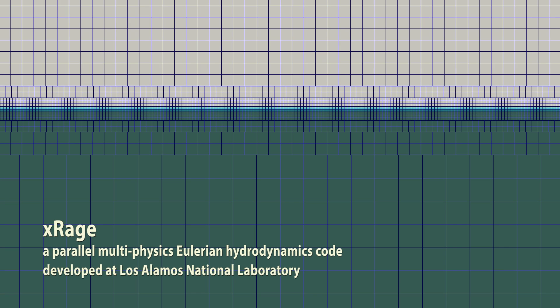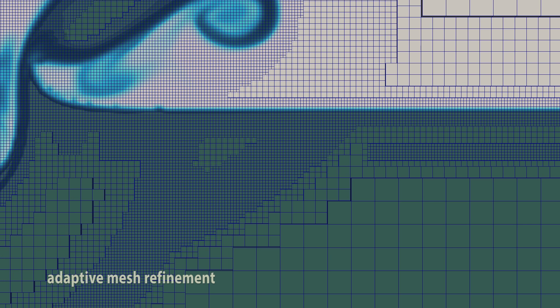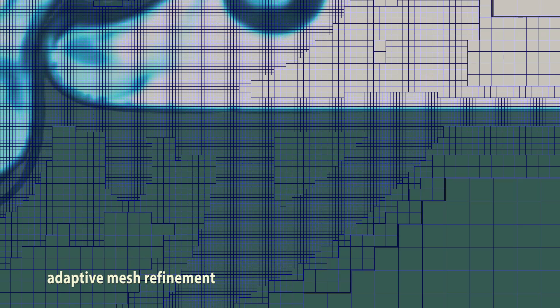We used XRAGE, a parallel multiphysics Eulerian hydrodynamics code. XRAGE uses adaptive mesh refinement to continually subdivide computational cells in important areas, applying more computing power to where it's needed.